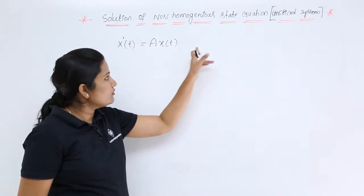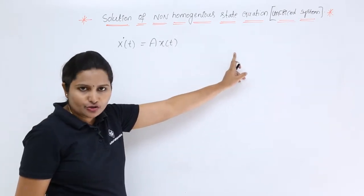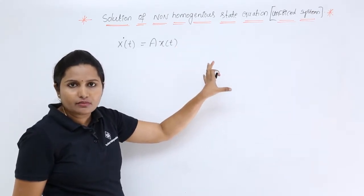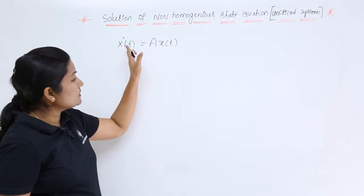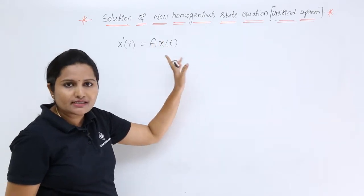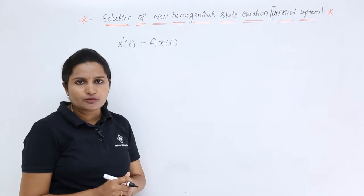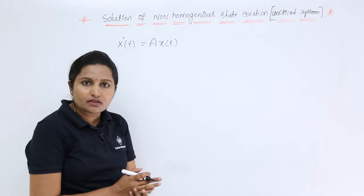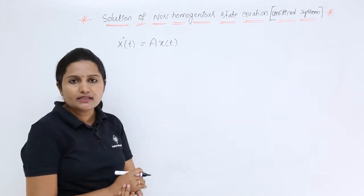If it is a forced system, you have another term: x_dot(t) = A·x(t) + B·u(t). For an unforced system, we do not have the second term B·u(t). So here, x_dot(t), which means d/dt of x(t), is equal to A·x(t). This is the state equation for the unforced system, and we need to find its solution.